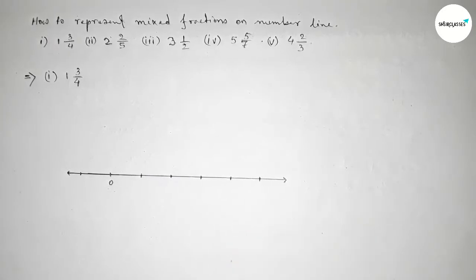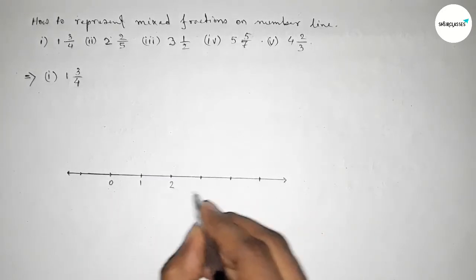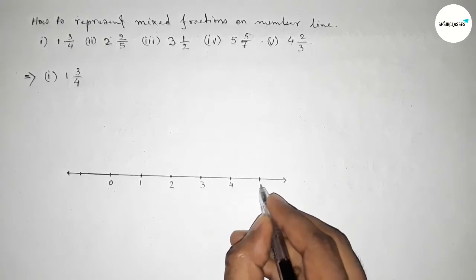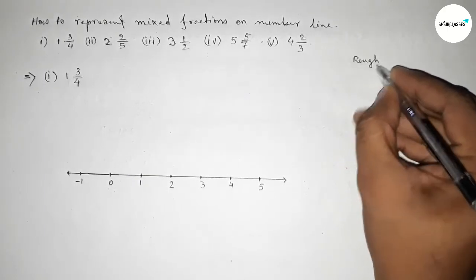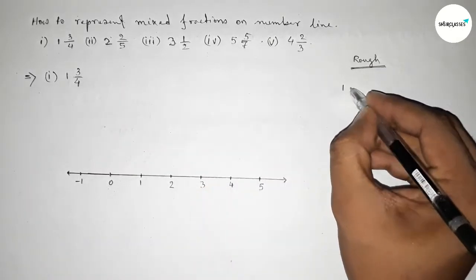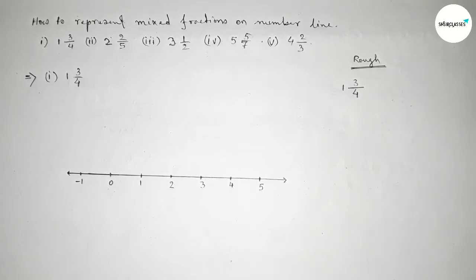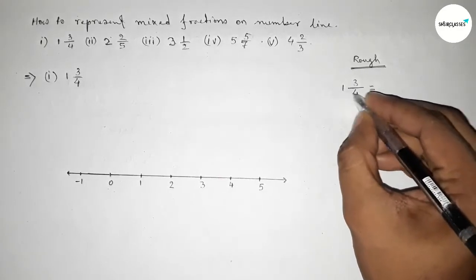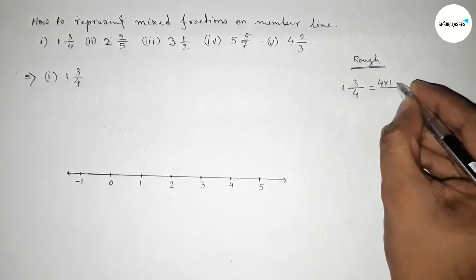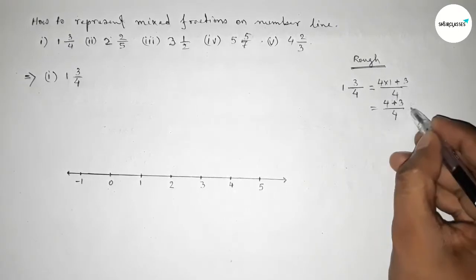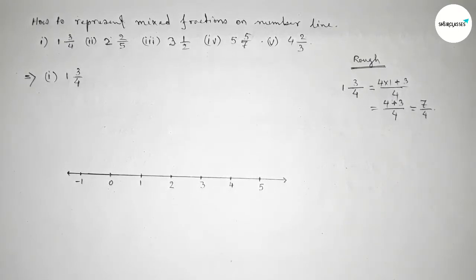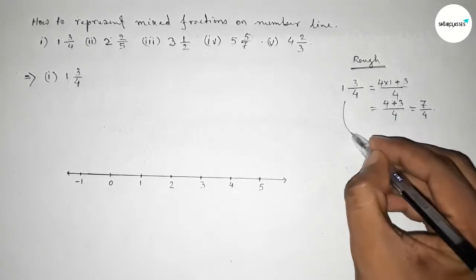Marking the numbers on the line: one, two, three, four, five, and on the other side minus one. Now discussing one and three over four. We know how to convert it into an improper fraction: four times one plus three, which gives four plus three over four, so this is seven over four.